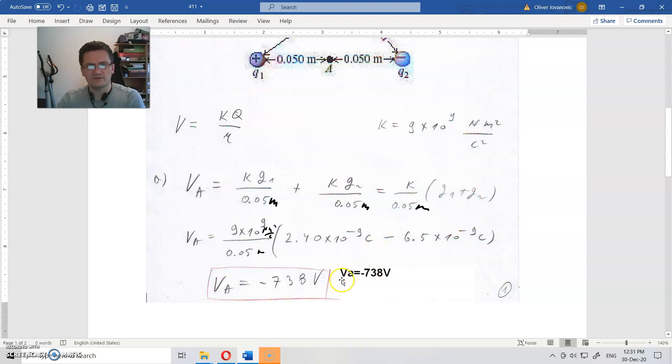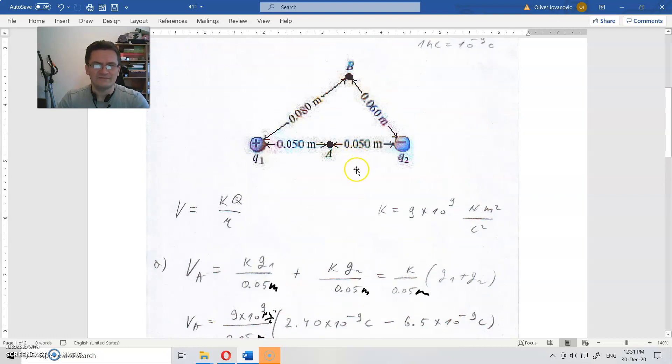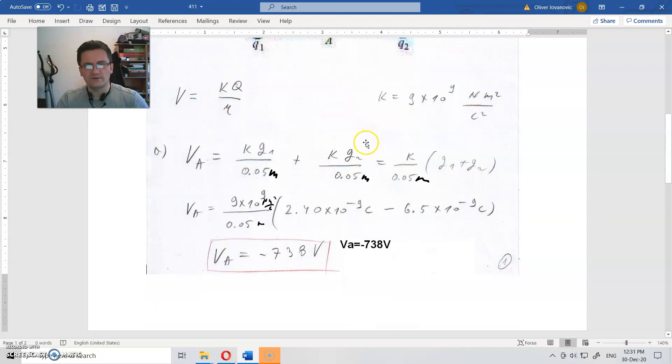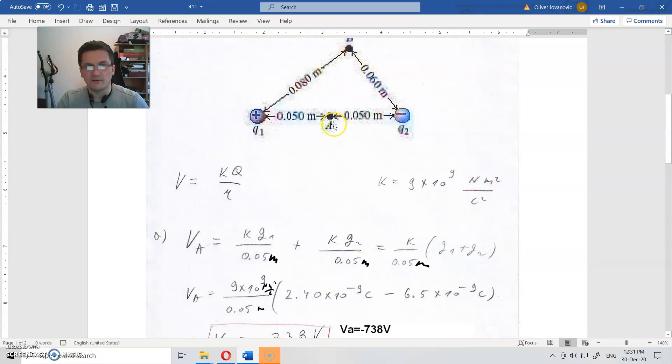And we have potential at point A to be minus 738 volts, that is what it is. Now we can similarly calculate potential here, and then from that too, we could calculate work from here to here.